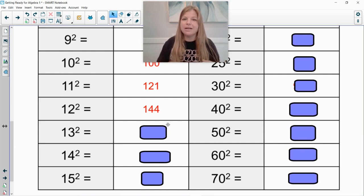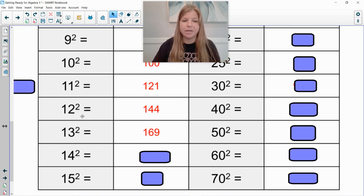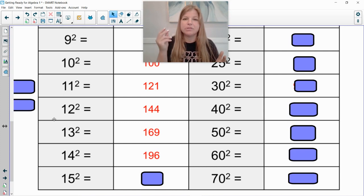The next 4 kind of have a beat to them. They have a pattern to them. My students always think I'm so corny when I do these patterns and beats but I just feel like it speaks to me. So 13 squared is 169. 14 squared is 196. So what's cool to remember about that is the last two digits just flipped their order. So 169, 196.